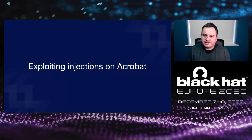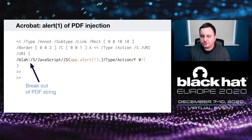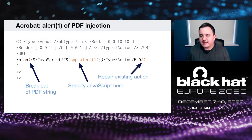Now let's talk about exploiting injections on Acrobat. This is the alert-one of PDF injection — like alert-one in JavaScript. First we break out of the PDF string using the closing parenthesis, we use the JS dictionary to define our JavaScript — in this case app.alert(1) — we repair the existing action using an opening parenthesis, and this creates an alert box to prove the injection worked. I used this style across many different injections to confirm they worked, then built up from there.